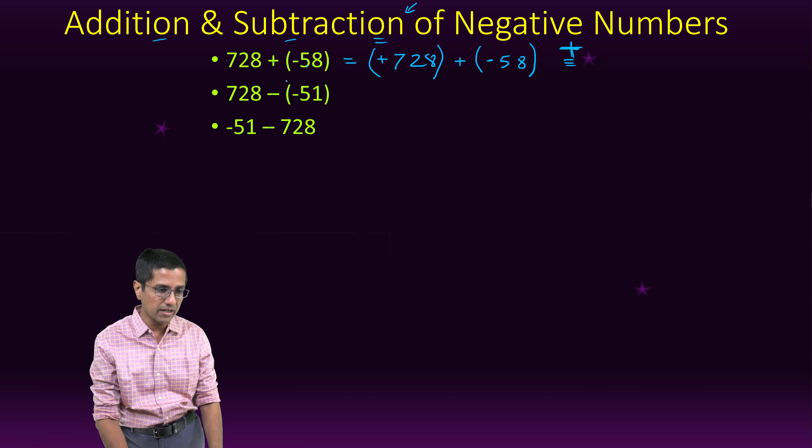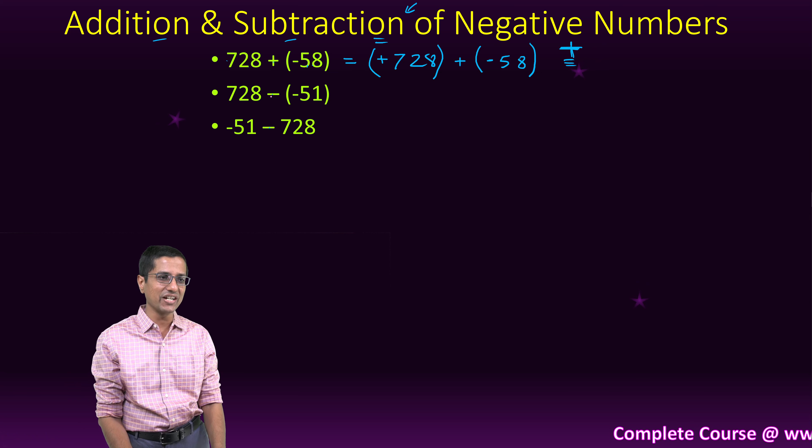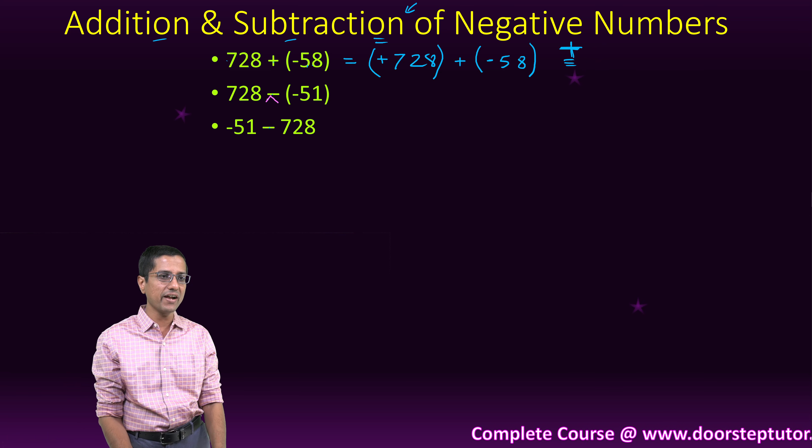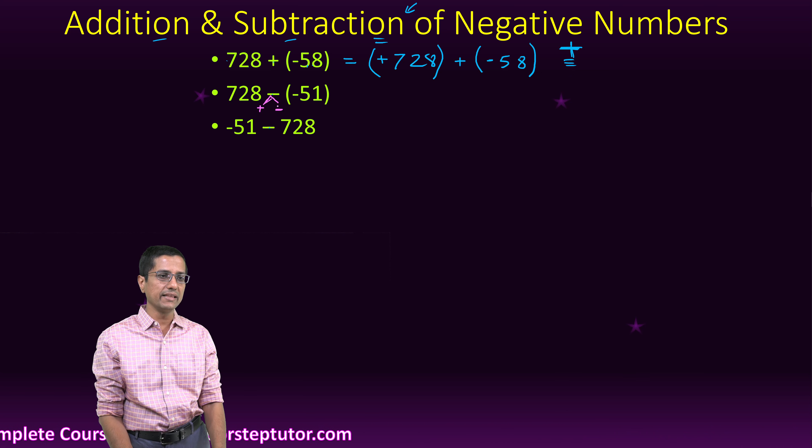This means it's a subtraction. We will convert this subtraction to an addition. The way we do it is that we divide the subtraction into two portions. One is the plus and the other is minus. And this minus, we move it with the operand.